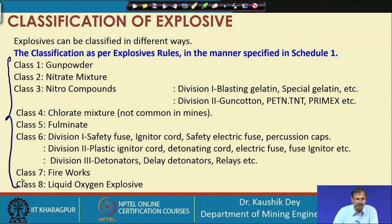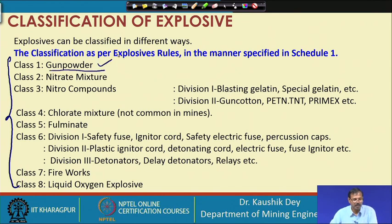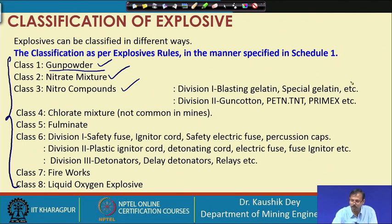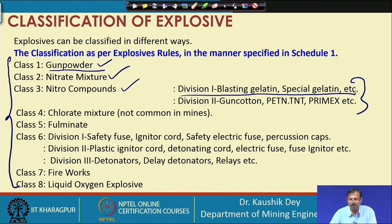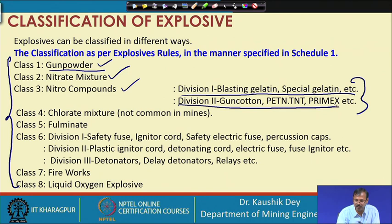The 8 classes are: class 1 — gunpowder, which is a low explosive; class 2 — nitrate mixture; class 3 — nitro compounds, further divided into division 1 for blasting gelatin, special gelatin, and gelatinous explosives in which nitroglycerin is mixed with ammonium nitrate or other things; and division 2 for gun cotton, TNT, pentaerythritol tetranitrate (PETN), etc. Class 3 covers nitro compound-based explosives.